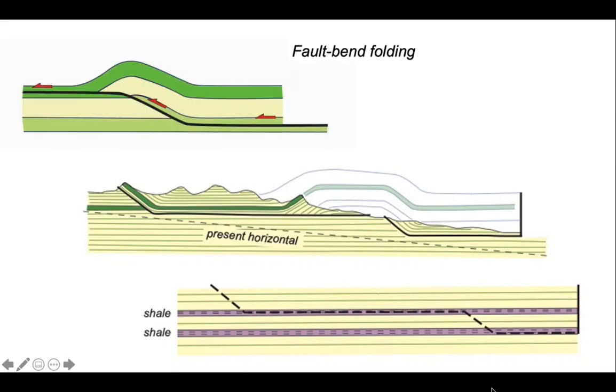And here's the representation in a schematic diagram. We're generating a fold as a consequence of moving up a shaped fault, a fault with bends in it. So this is called a fault bend fold.